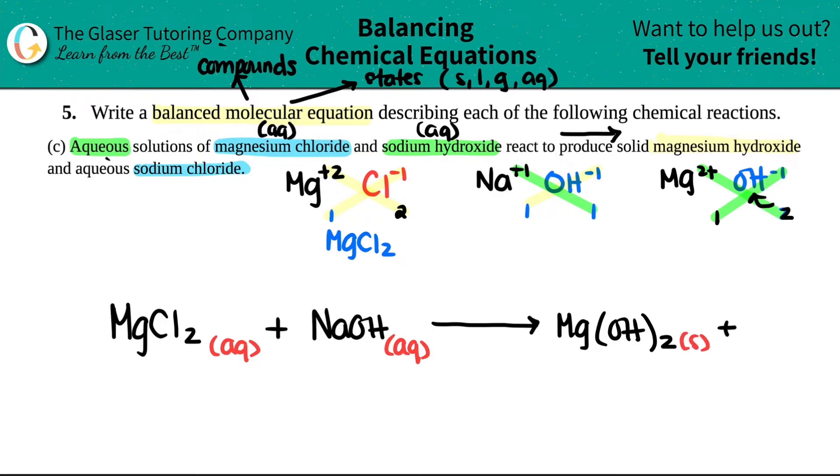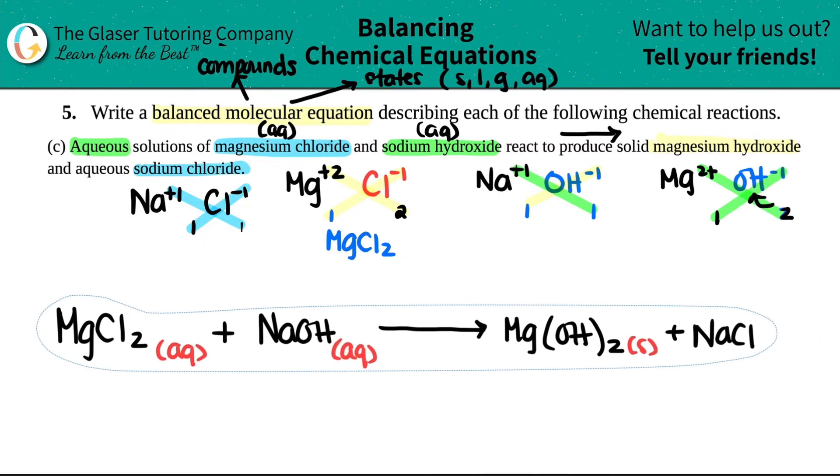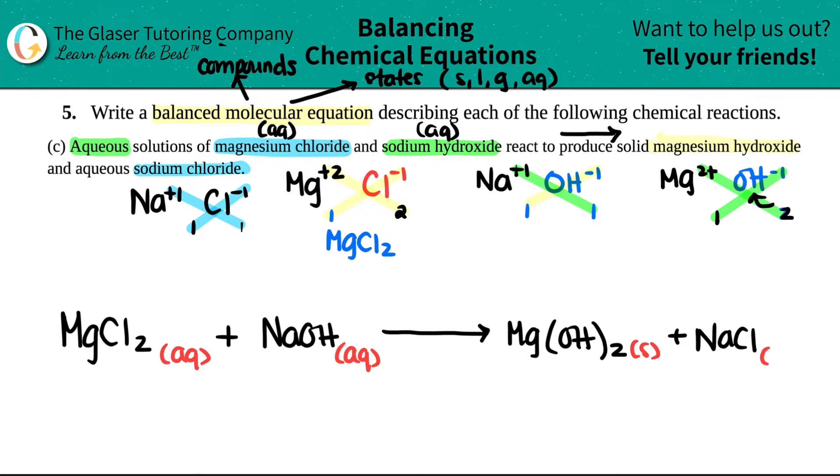Plus, and aqueous sodium chloride. Sodium is in group one. That's a plus one charge. Chlorine, just like before, was a minus one. You guys start to see it? One and one. So just be NaCl. And that's aqueous, so let me just bring this over and I will just put AQ.